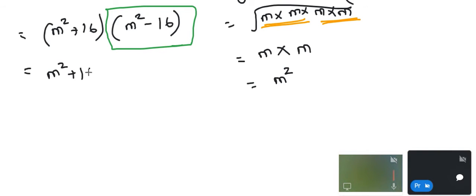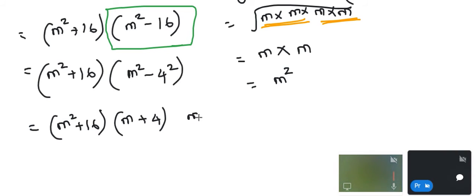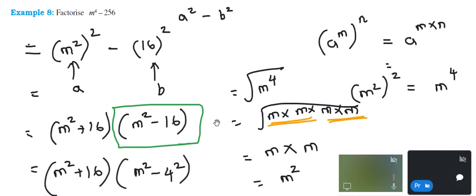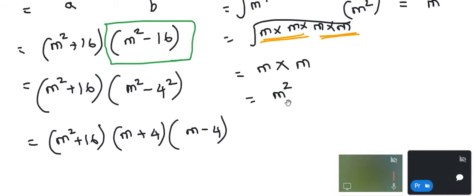This — m squared plus 16 — we cannot further factorize, so we leave it as it is. This m squared minus 16, I can write as m squared minus 4 squared. So again this factor is in the form of a squared minus b squared. I can apply the identity where a equals m and b equals 4. So I can write this as a plus b — that is m plus 4 — and a minus b — that is m minus 4. So this is the final factor form of the given algebraic expression. For m power 4 minus 256, the factors are m plus 4, m minus 4, and m squared plus 16.